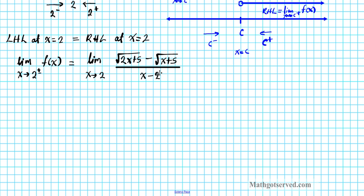How do we find this limit? If we evaluate by direct substitution, we get 0 in the denominator — but that doesn't necessarily mean the limit doesn't exist. We have a discontinuity of some sort, and we're going to see if we can simplify in such a way that the discontinuity gets removed. We'll rationalize the numerator by multiplying top and bottom by the conjugate: the square root of (2x + 5) plus the square root of (x + 7).